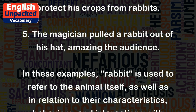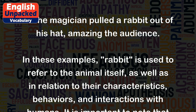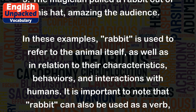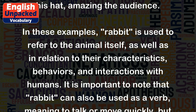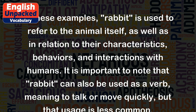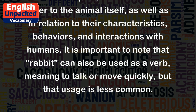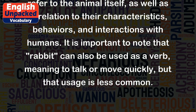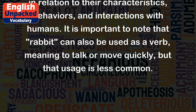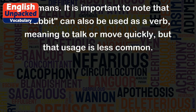In these examples, rabbit is used to refer to the animal itself, as well as in relation to their characteristics, behaviors, and interactions with humans. It is important to note that rabbit can also be used as a verb, meaning to talk or move quickly, but that usage is less common.